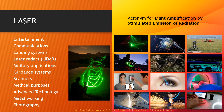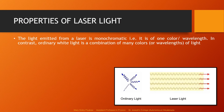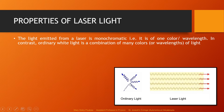Lasers have a wide range of applications. Now let us look into the properties of laser light. Light emitted from a laser is monochromatic — that is, it is of one color, one wavelength. In contrast, ordinary white light is a combination of many colors and many wavelengths. The laser beam will have only a particular wavelength, whereas ordinary light will have a combination of wavelengths.